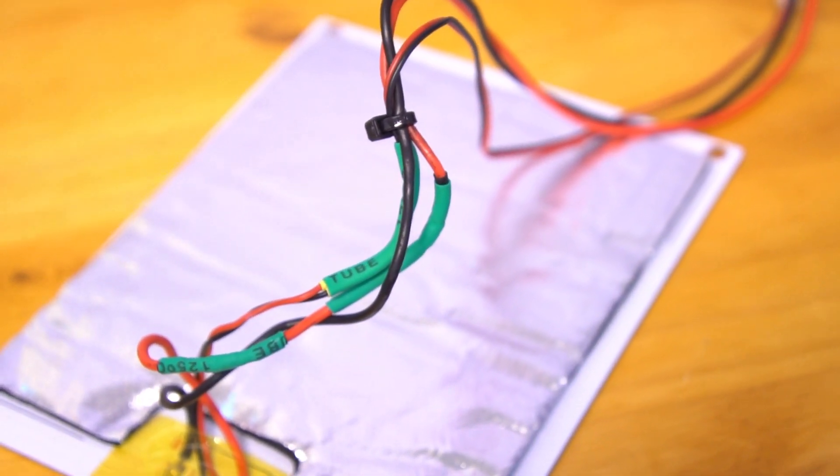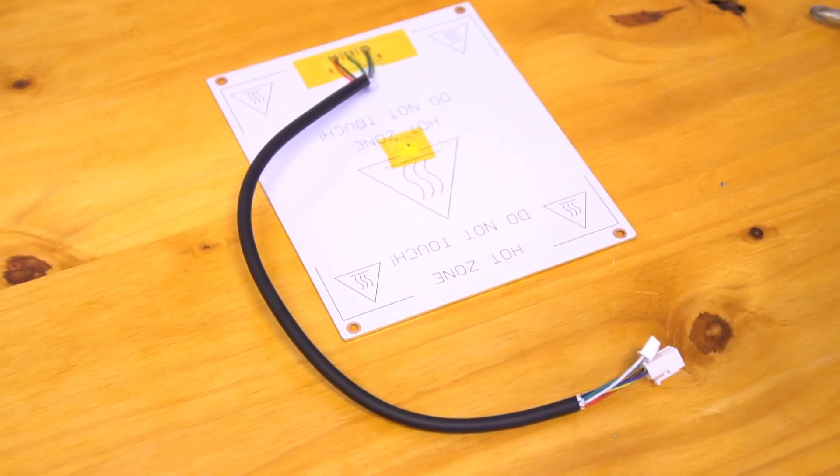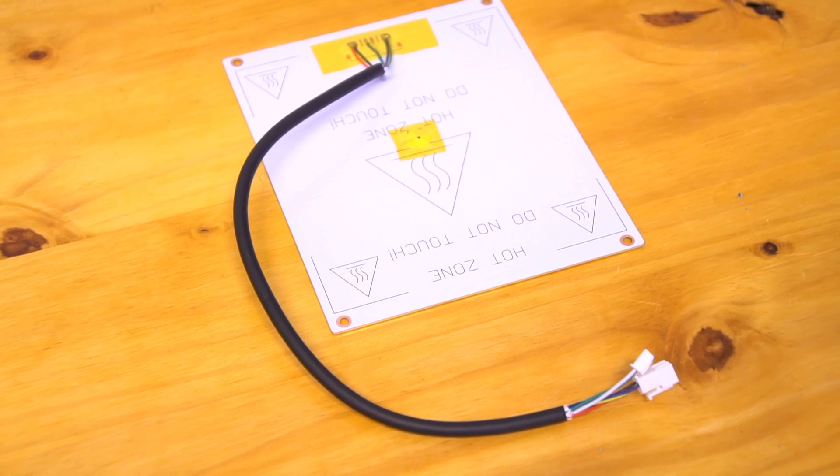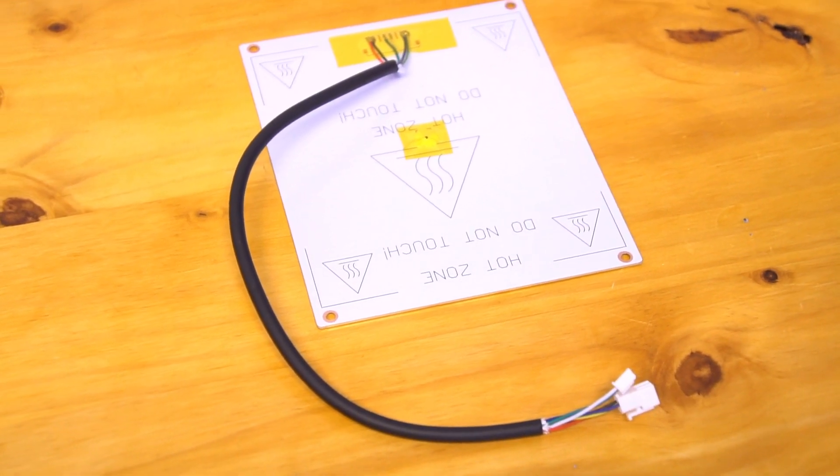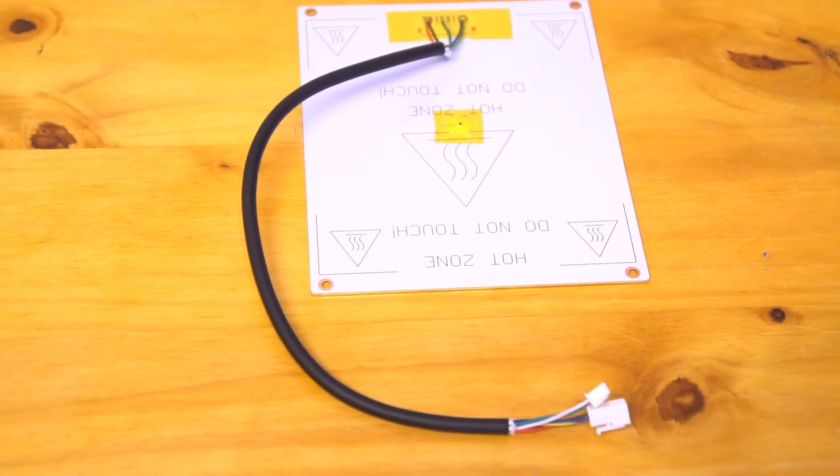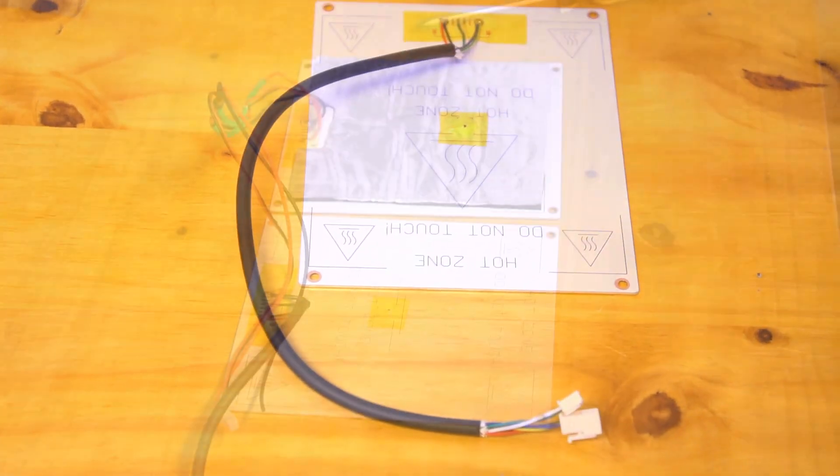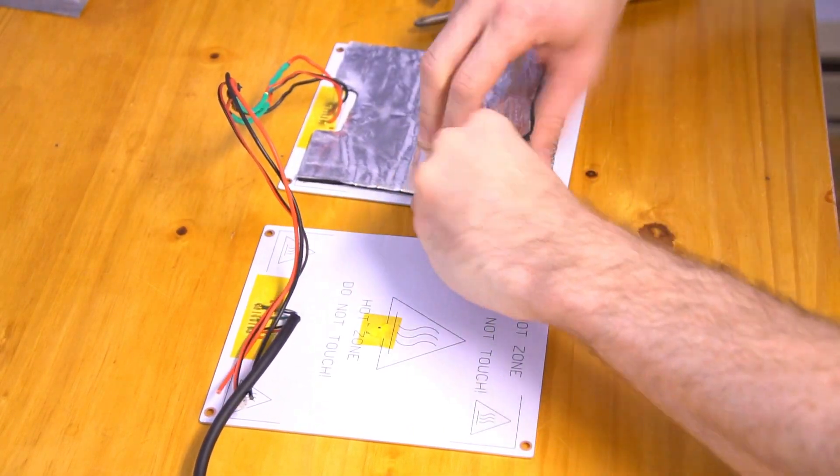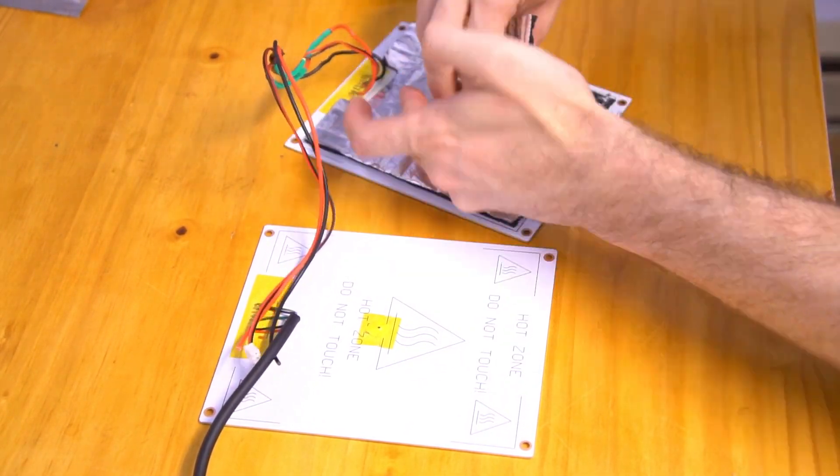And luckily that's a pretty easy job as the whole heated bed arrangement can be had for cheap as a replacement part and the replacement even has protected cables. The one thing that doesn't come with the replacement bed though is this insulating material which is important to keep the bed up to temperature.